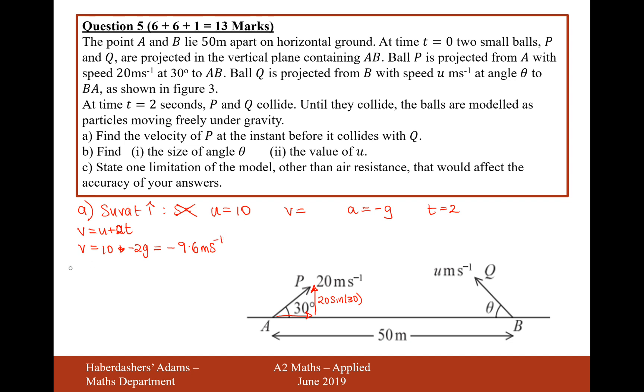And then we need the horizontal velocity. Now horizontally, remember for these kind of projectiles, because there's not going to be any acceleration horizontally, the speed horizontally is just going to remain constant. That's going to be 20 cos 30. It's always going to remain as 20 cos 30. Cos 30 is root 3 over 2, so that's going to be 10 root 3.